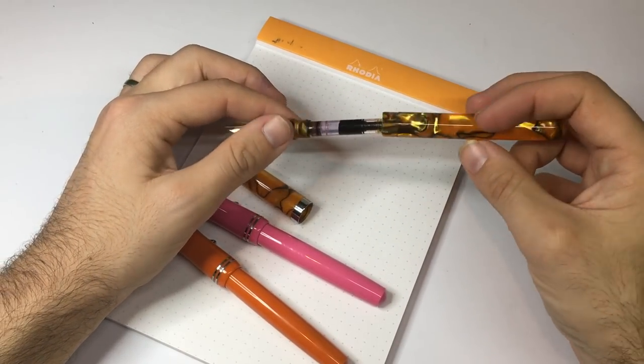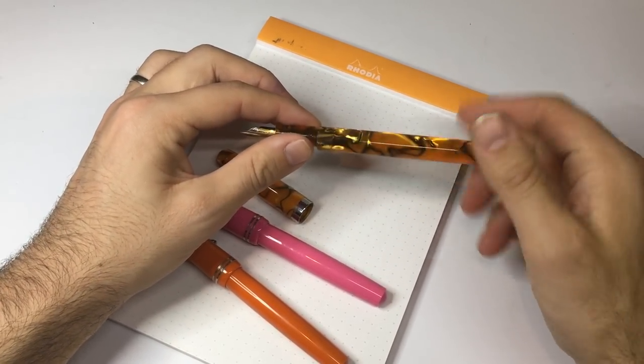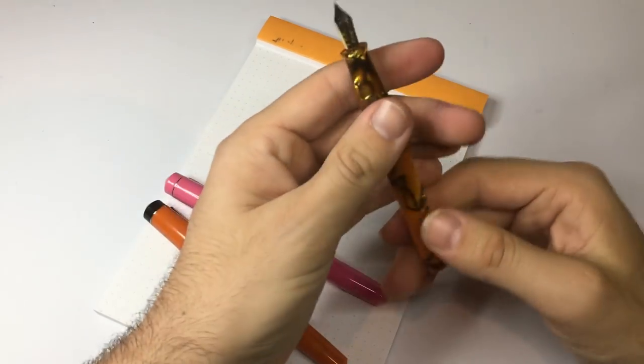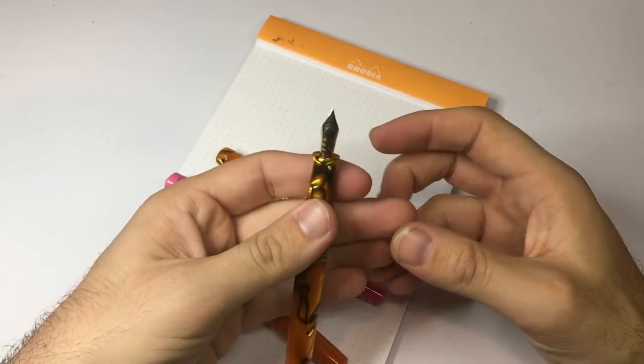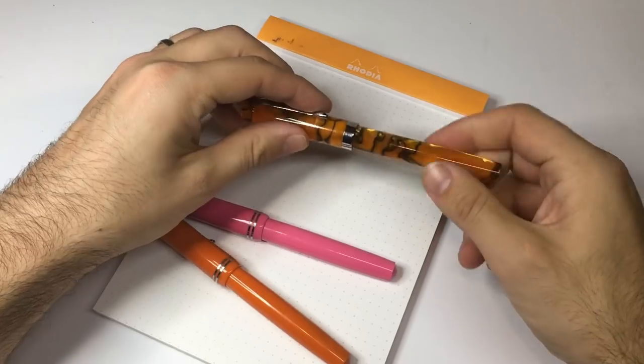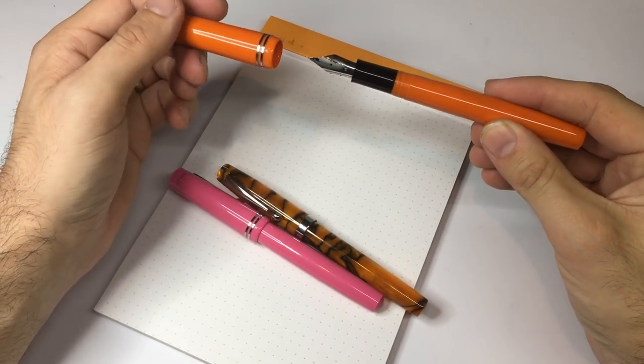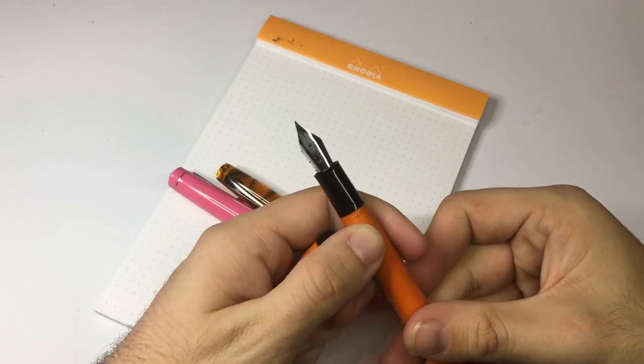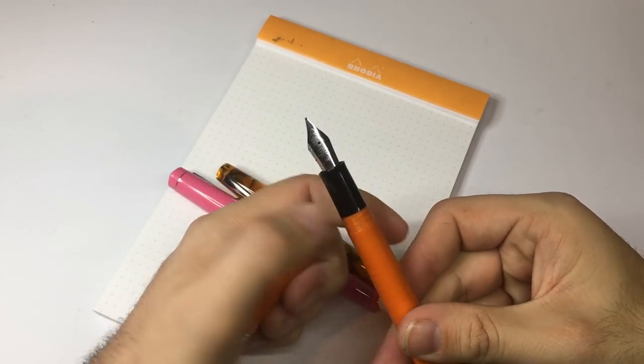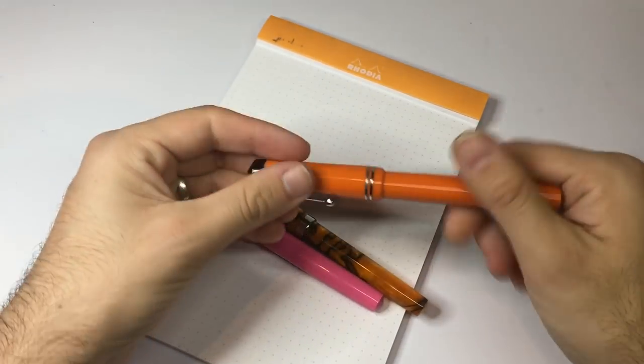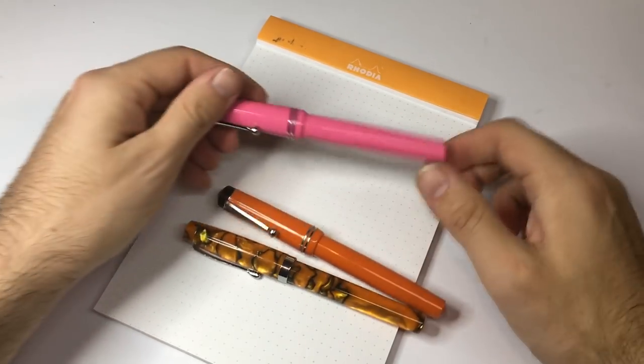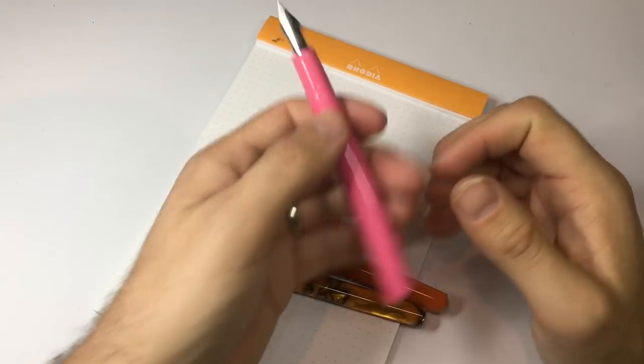Fountain Pen Revolution have a lot of eyedropper pens made in India. These are Indian made as well, but these are all cartridge converter pens that I have here. As I said to you, the nib on the Himalaya here is the original number five flex nib. On the orange Darjeeling it's the standard medium number six.